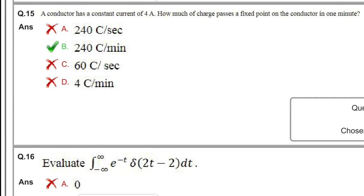Next question: a conductor has a constant current of 4 amperes. How much charge passes a fixed point on the conductor in one minute?